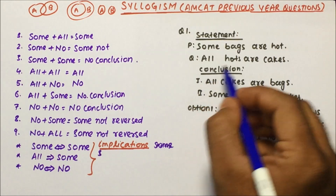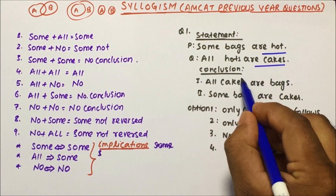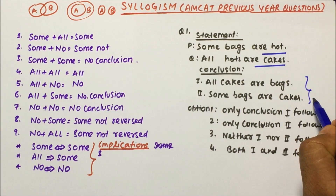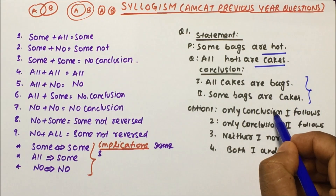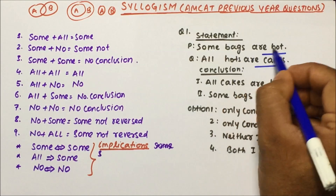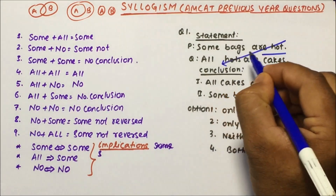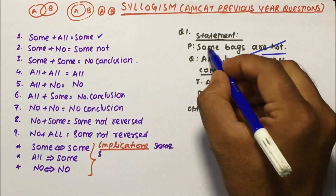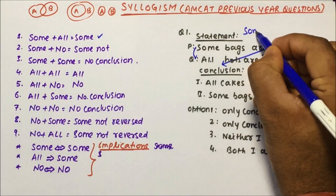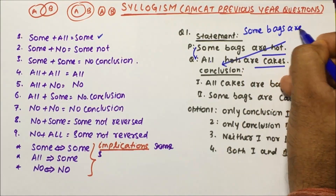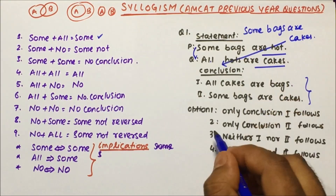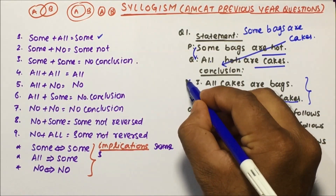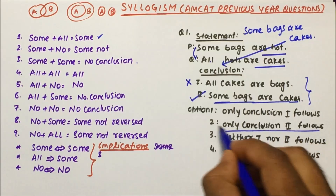Question number one statement is: Some bags are hot and all hots are cake. We have two conclusions: All cakes are bags, and Some bags are cakes. Now, 'hot' and 'hot' is the common term, so we cancel hot and hot. Then some plus all — some plus all will be some. So we can say some bags are cakes will be the conclusion. Some bags are cakes will be true and the other will be false. So only conclusion two follows.